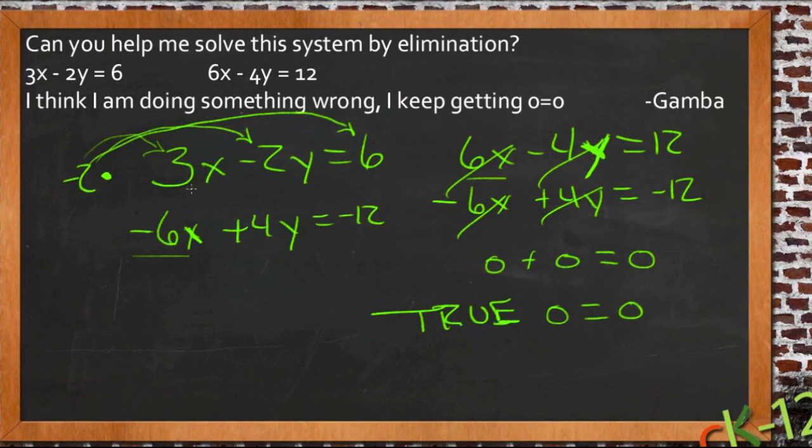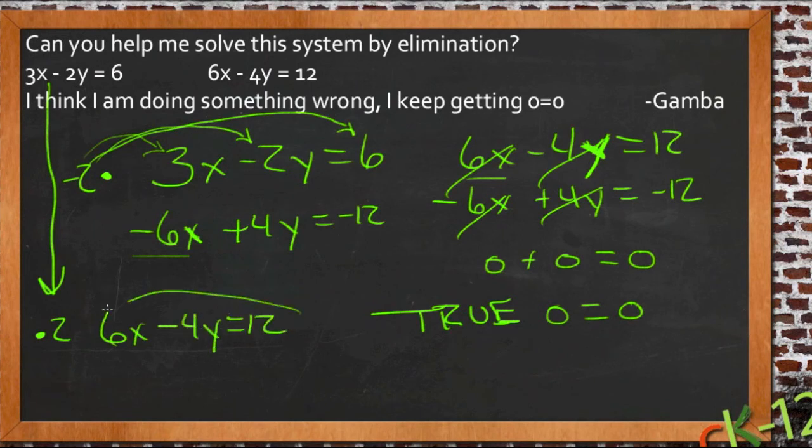And we can see that because all we did here to make them exactly opposite each other was to multiply this equation by negative 2. If I actually had taken this first equation and multiplied by positive 2, look what would have happened. If I took this here and multiply it times regular 2, I get 6x minus 4y equals 12. And that is exactly the same as the other equation, which means that these two equations are the same.